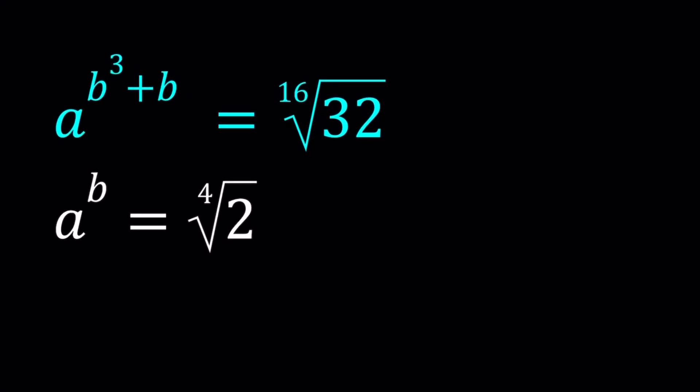Hello everyone. In this video, we're going to be solving a homemade exponential system. I call this homemade because I came up with the problem, but these problems are very easy to come up with. Anyway, so we have a to the power b cubed plus b equals the 16th root of 32, and a to the power b equals the 4th root of 2. And we're going to be solving for a and b values.